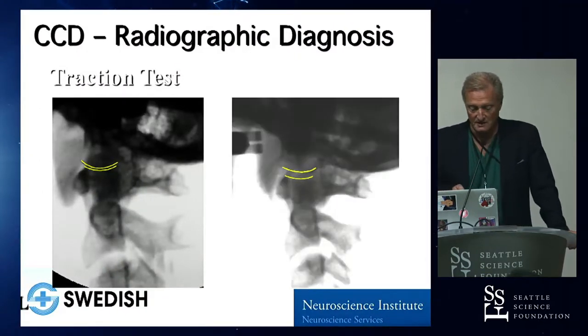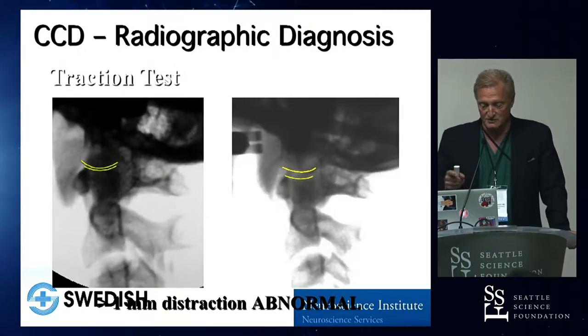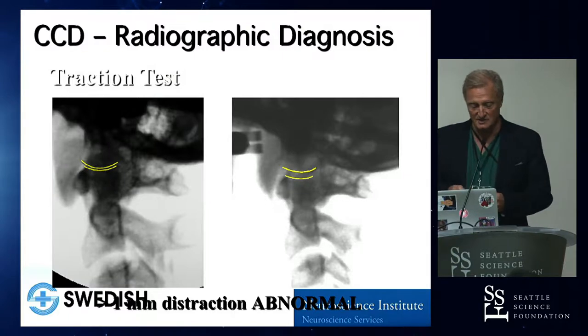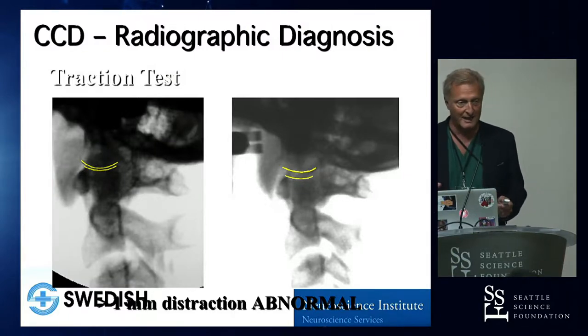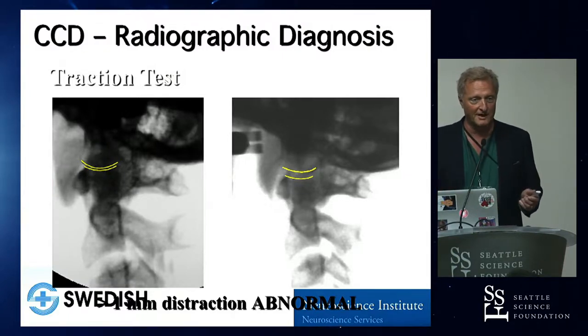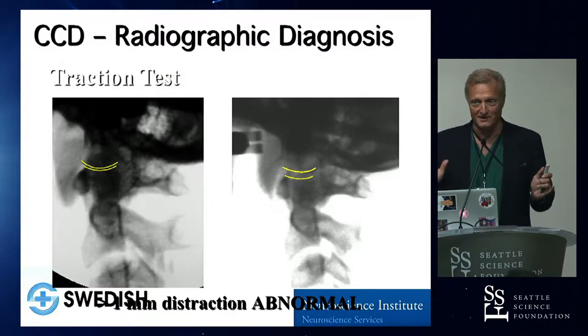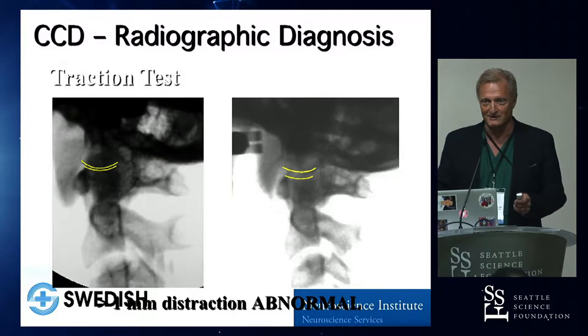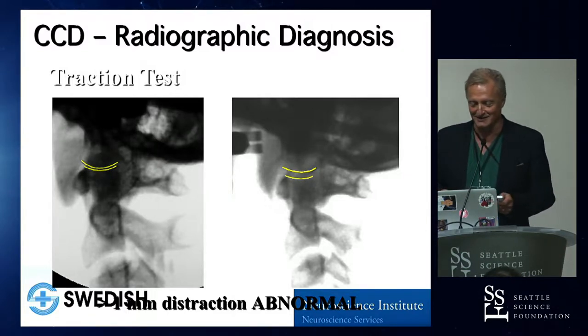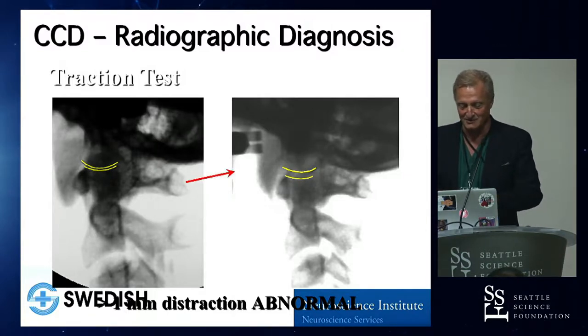Here's a traction test to show you. You have to be coaxial to the C1-C2 joints, and if there's a gap in there you'll see it. Stop traction immediately. Then you have your diagnosis.